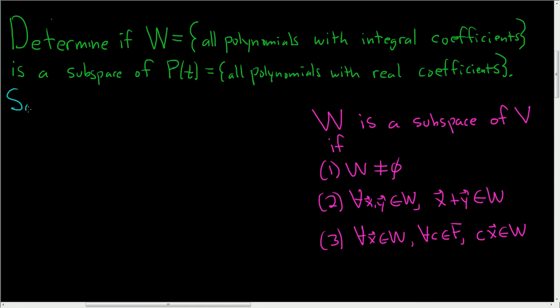So, solution. Over here I've written down the criteria for W to be a subspace of V. In this problem, this is our V, and this should not be a subspace.